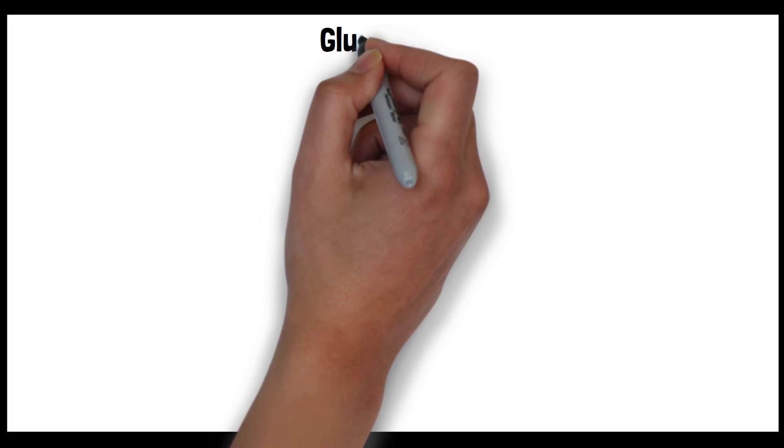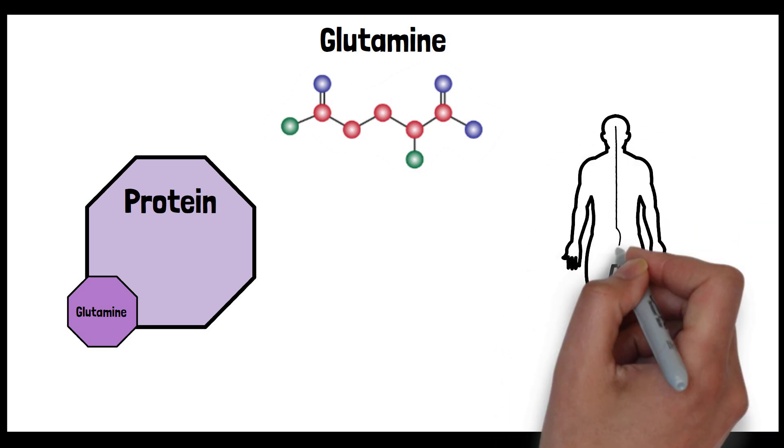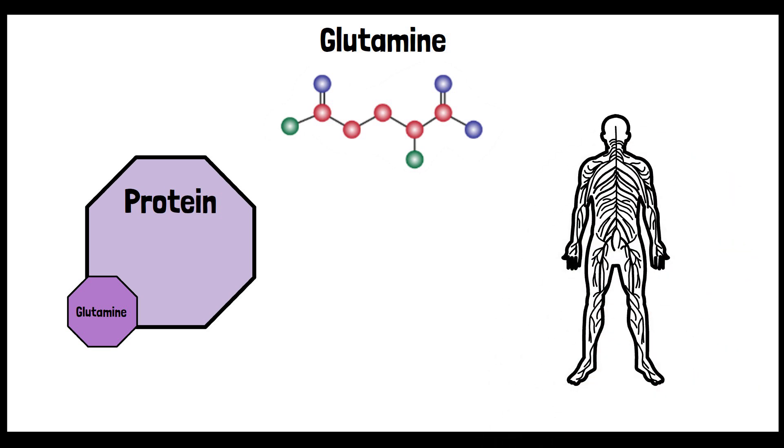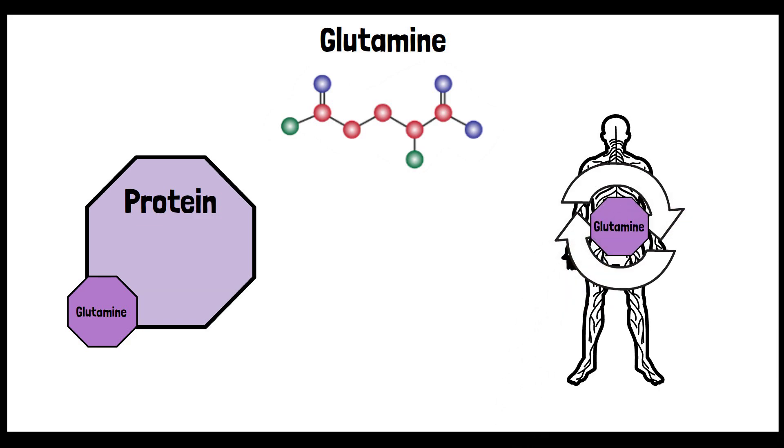Glutamine is an amino acid, one of the building blocks of protein, that plays numerous vital roles in the body. It is considered a conditionally essential amino acid, which means that the body can typically produce it on its own.